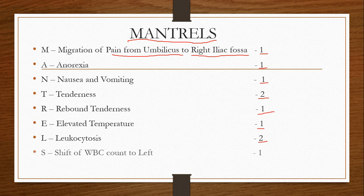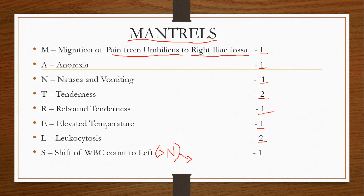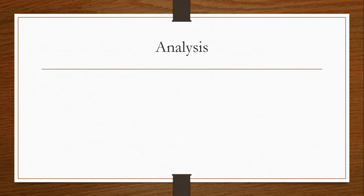S stands for shift of WBC count to the left, meaning neutrophilia — an increase in the number of neutrophils. On the differential count, neutrophils will be greater than 75%, and the score is 1. Now to analyze the total score: if the total score is less than 5, appendicitis is unlikely.